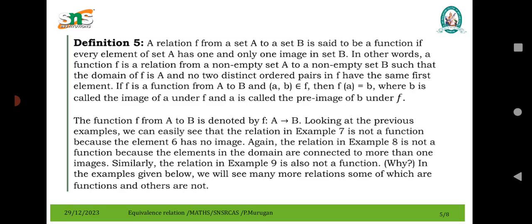Definition 5: A relation f from a set A to a set B is said to be a function if every element of A has one and only one image in B. In other words, a function is a relation from non-empty set A to B such that the domain of f is A, and no two distinct ordered pairs have the same element. Every element in a domain has a unique image, then it is called a function.